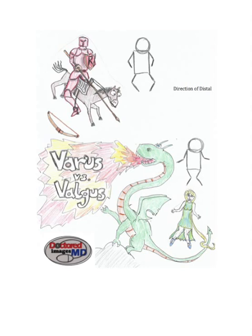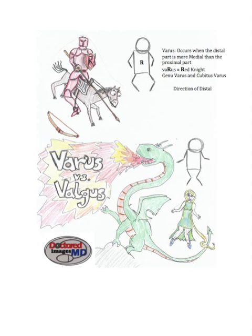For Varus, represented here by the red knight, Varus occurs when the distal part is more medial than the proximal part. The big R in Varus stands for the red knight — you can think of him riding a horse with a lance tucked under his arm as he battles a dragon. You'll also notice he's jumping over a bow, because Varus is also called bow-legged and can be caused by things like rickets. Here we can see Genuvarus and Cubitus Varus with our stick figure with the R on his chest.